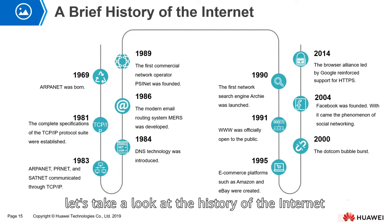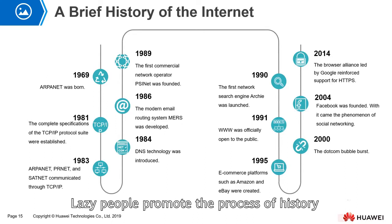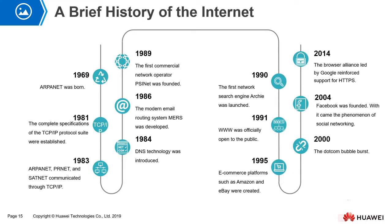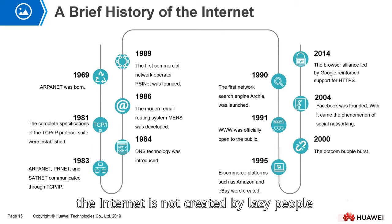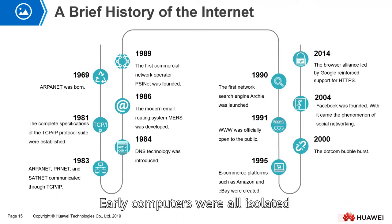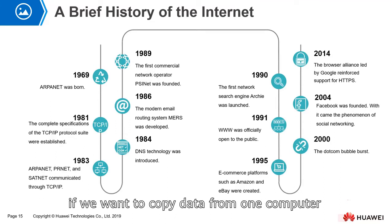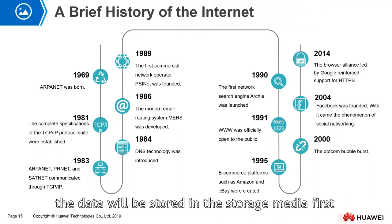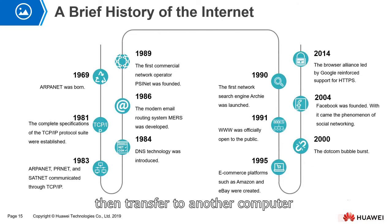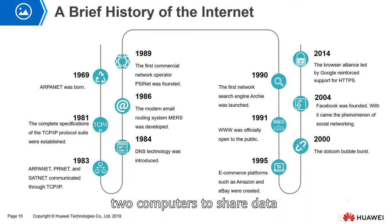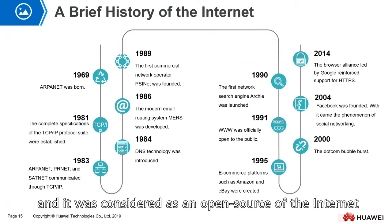Let's take a look at the history of the internet. We often make jokes that lazy people promote the process of history, because lazy people want to reduce their workload. Early computers were all isolated. If we want to copy some data from one computer to another, we have to use a storage medium. Some people wanted to directly connect two computers to share data. In 1969, for military purposes, ARPANET was born, and it is considered as the origin of the internet.